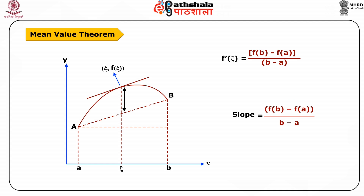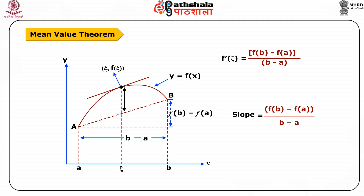The condition for the tangent line at (epsilon, f(epsilon)) to be parallel to line AB is that epsilon can be chosen so that the vertical distance between (epsilon, f(epsilon)) and AB is as large as possible. Thus, the mean value theorem states that if f is continuous in the closed bounded interval AB and differentiable in the open interval AB, then there exists at least one interior point epsilon in AB such that the derivative condition holds.